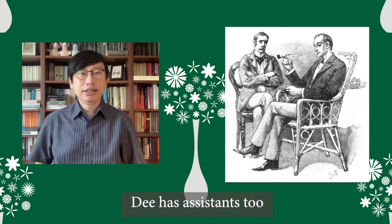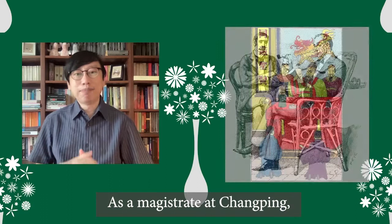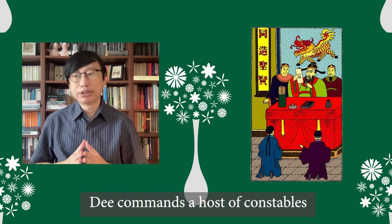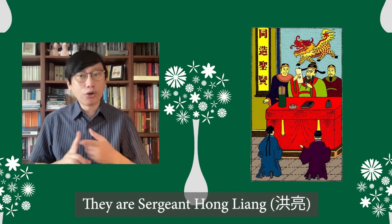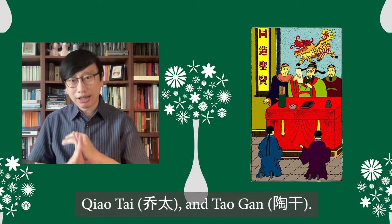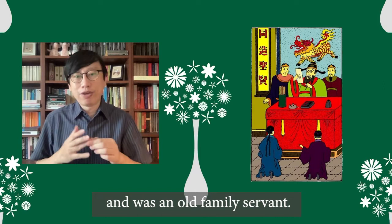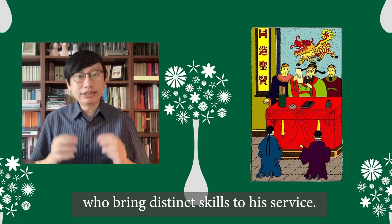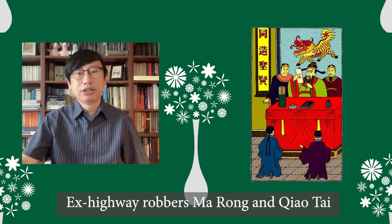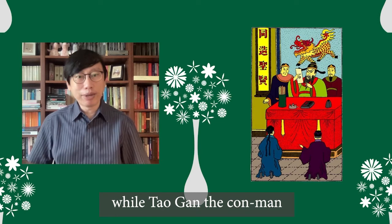Dee has assistants too — many more, in fact. As a magistrate at Changping, Dee commands a host of constables, although he relies most on four. They are Sergeant Hong Liang and his lieutenants Ma Rong, Chiao Tai, and Tao Gan. Hong serves as his advisor and was an old family servant. The other three are reformed criminals who bring distinct skills to his service. Ex-highway robbers Ma Rong and Chiao Tai are great fighters, while Tao Gan, the con man, now uses his wit for good.